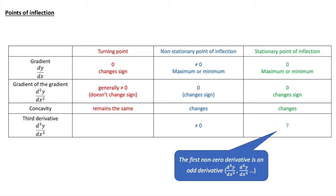The rule here is that the first non-zero derivative has to be an odd derivative for it to be a stationary point of inflection. But that means it could be the fifth derivative d⁵y/dx⁵, or even the eleventh, d¹¹y/dx¹¹. That was a silly example because we're never going to differentiate all that way down — there's a much better way of doing it, which we'll see in a moment.